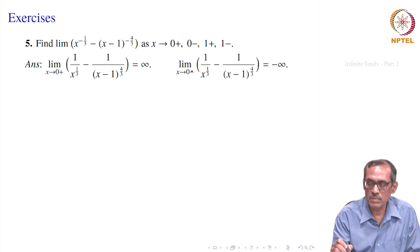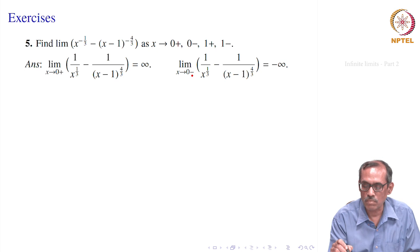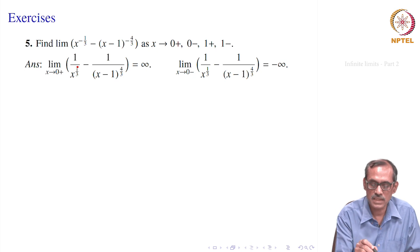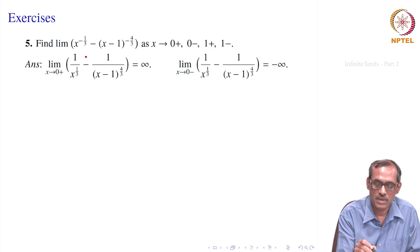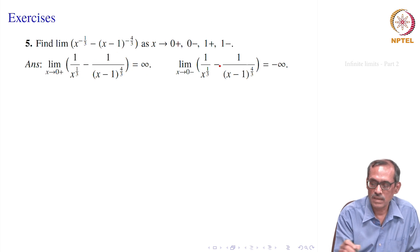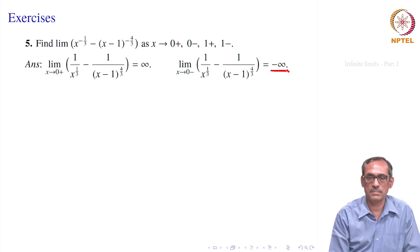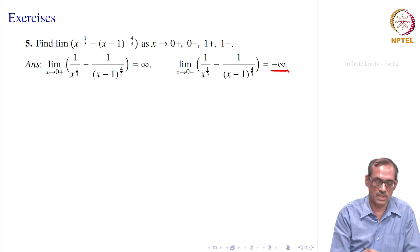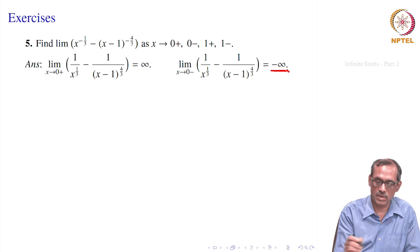As x → 0-, x is negative, so x^(1/3) is negative and 1/x^(1/3) → -∞. That is the dominating factor; the other term remains some bounded number. So the limit as x → 0- is -∞.